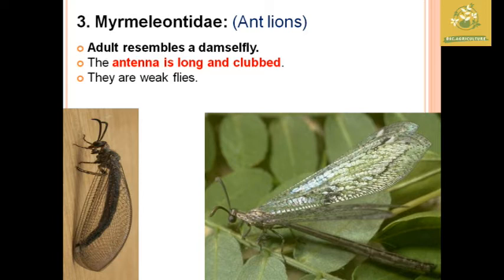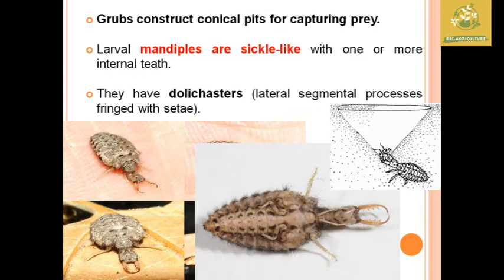Next we are going to see Myrmeleontidae, which comprises the ant lions. They resemble damselflies, and the antennae are long and clubbed. They are weak flyers. In the larval stages, the grubs construct conical pits in the soil for capturing prey. Larval mandibles are sickle-like with one or more internal channels, and they have a broad abdomen with fringed setae used for creating these conical pits.